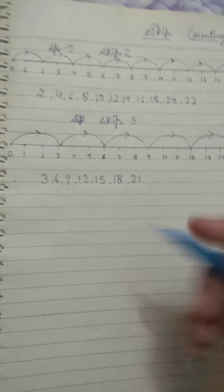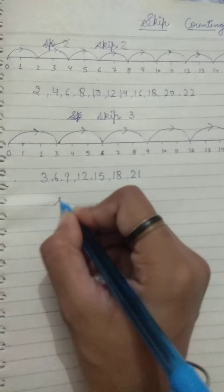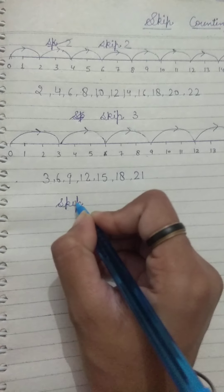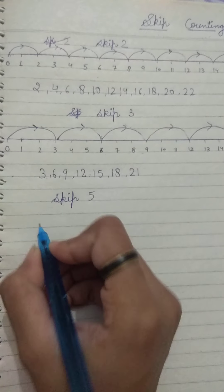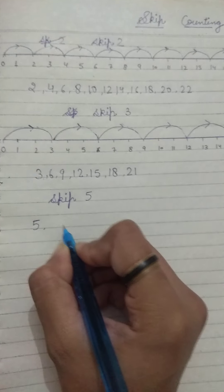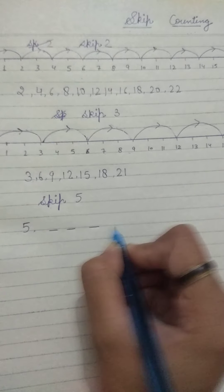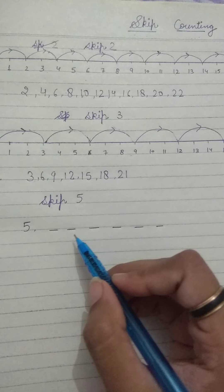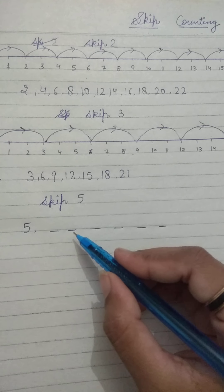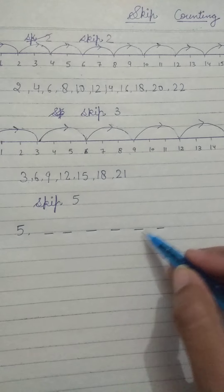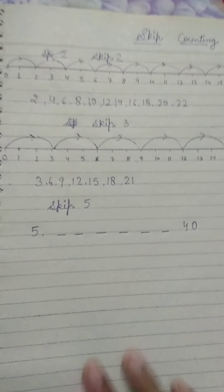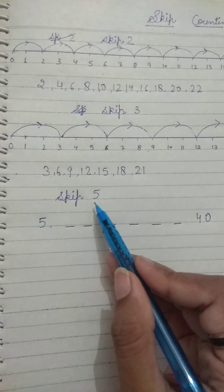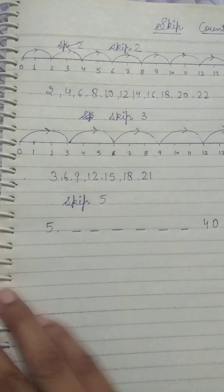Now we will do skip counting by 5 — we will do this without the number line. How do we do it? We will write some numbers ourselves. Now we will skip — we will open 5 fingers.